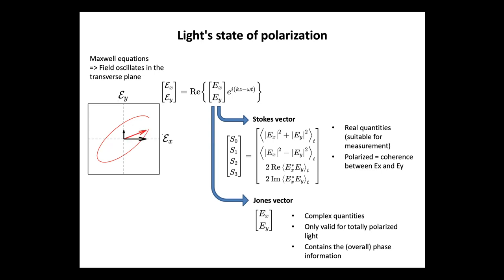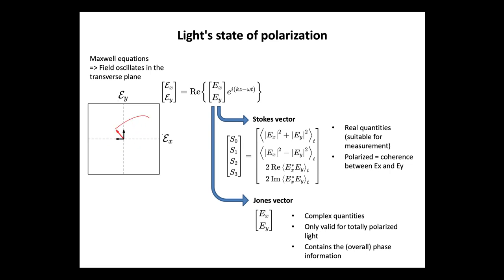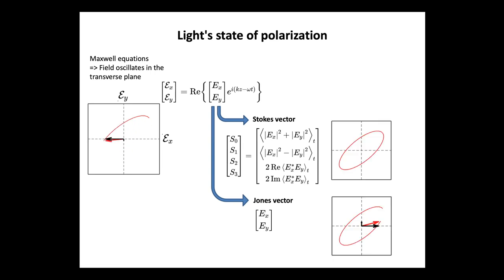Another way to define polarization is the so-called Jones vector, which is simply the two complex quantities in the description of the field. This description is only valid for totally polarized light, meaning there must be a clear phase relationship between the two components. Compared to the Stokes vector, the Jones vector has a great advantage in that it contains information about the overall phase — it tells you about the state of polarization and exactly where you are at a given time and location. This is why in the rest of this talk, I will stick to the Jones vector description.